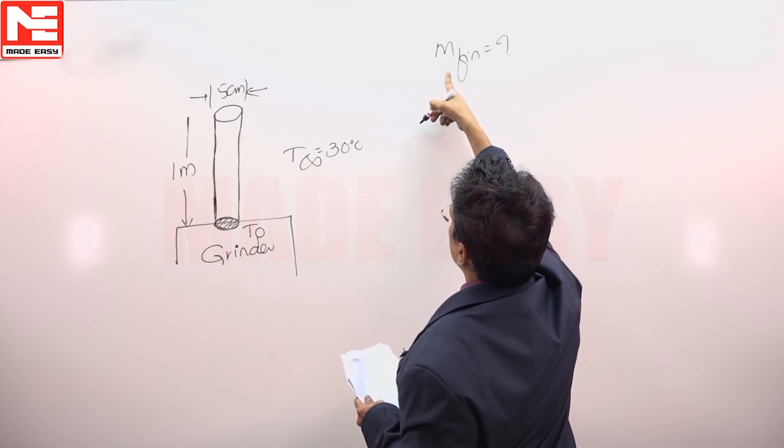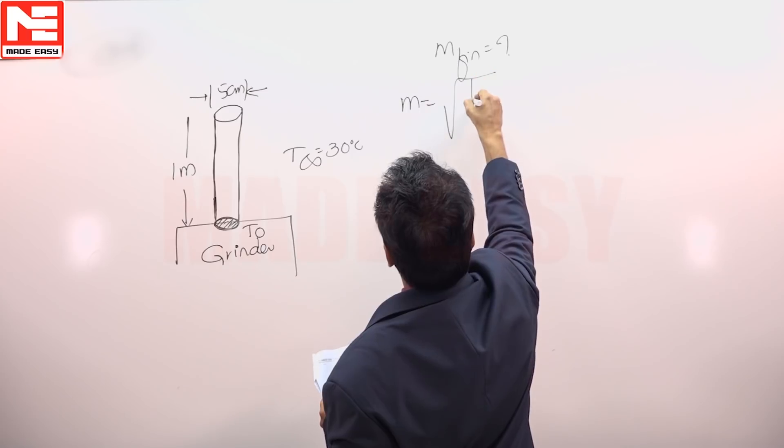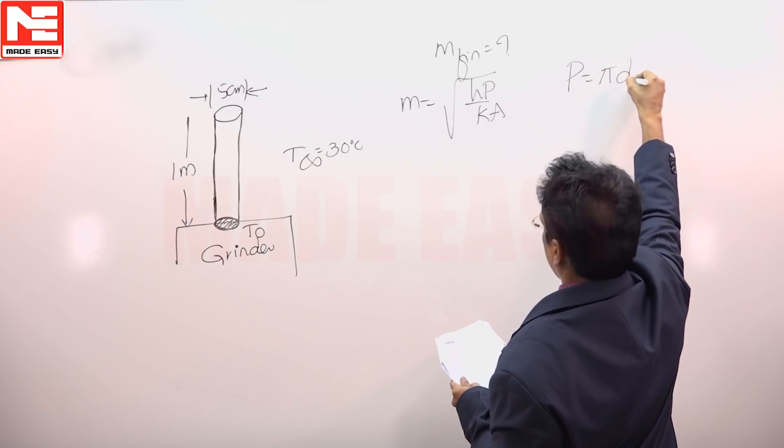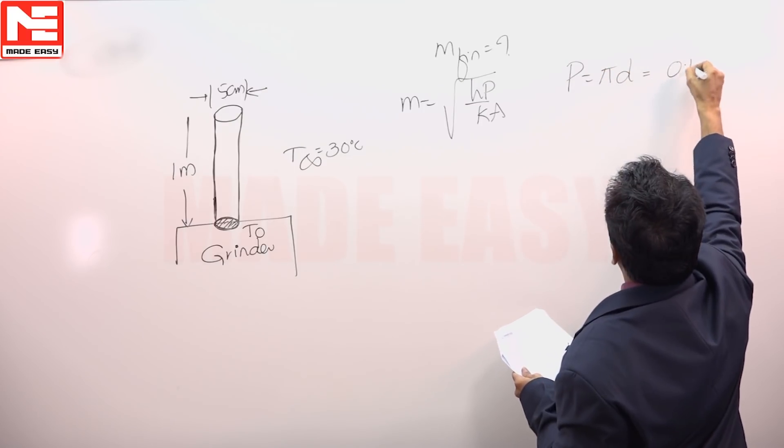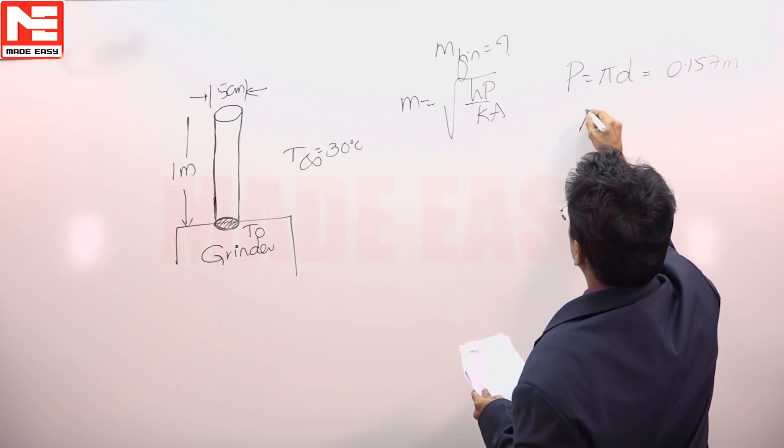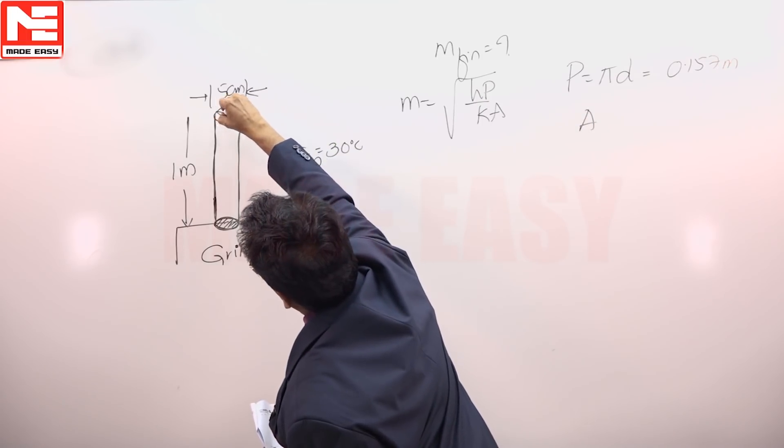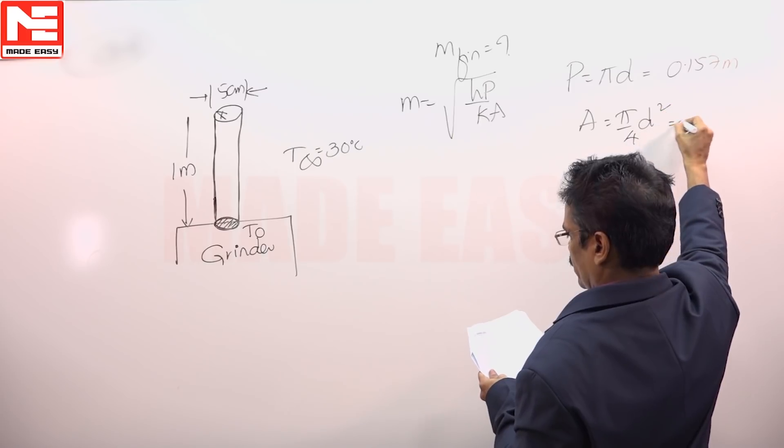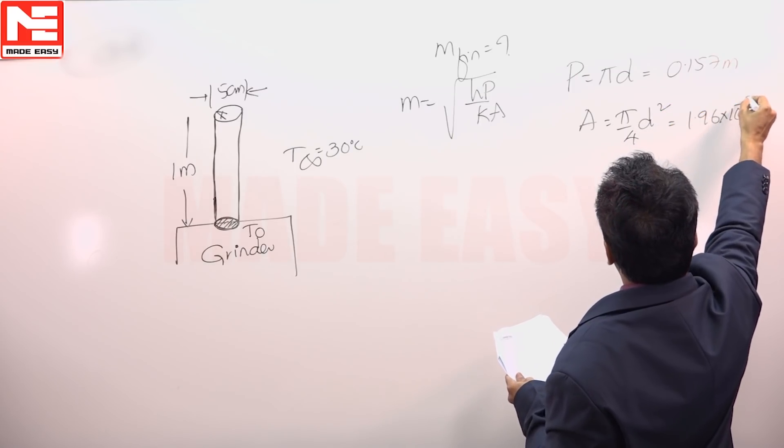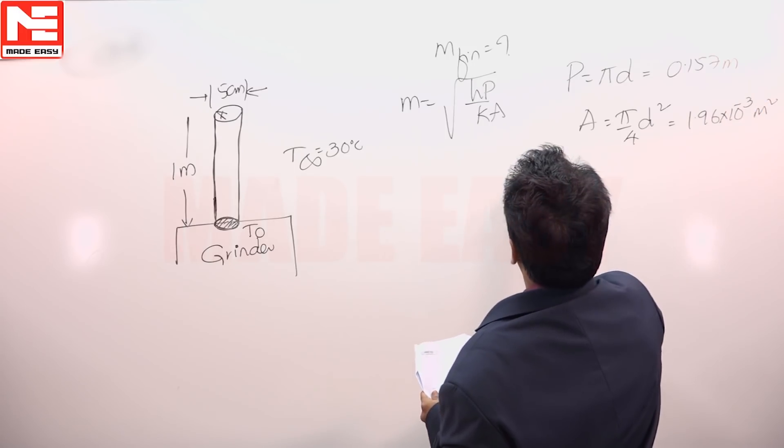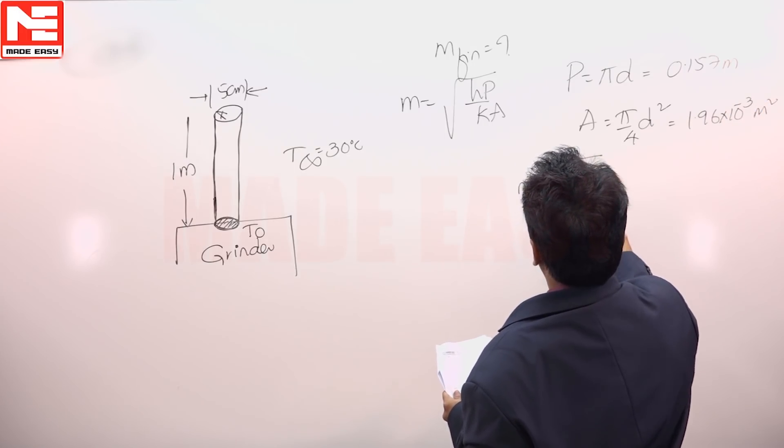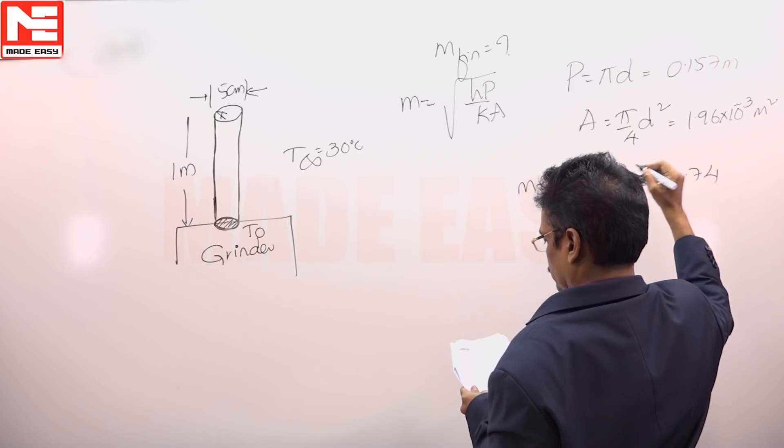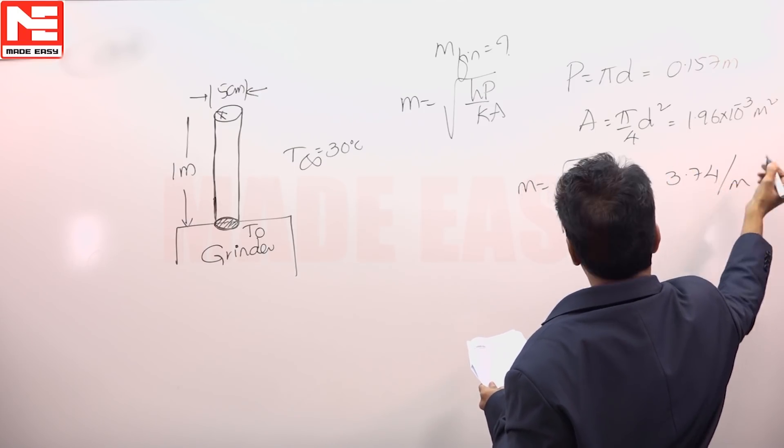In any fin analysis, the first step will be to calculate M value. M is the profile area. Profile area A is the profile area of the fin, the base area or the profile area π/4 D² = 1.96 × 10⁻³ meter square. So M value will be √(Hp/KA), that happened to be 3.74 per meter.